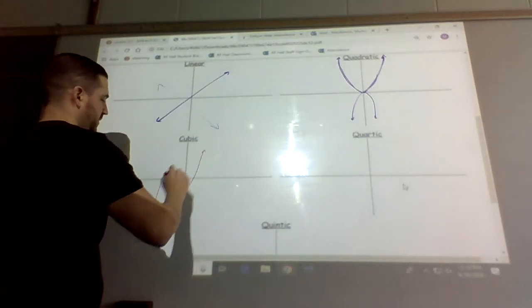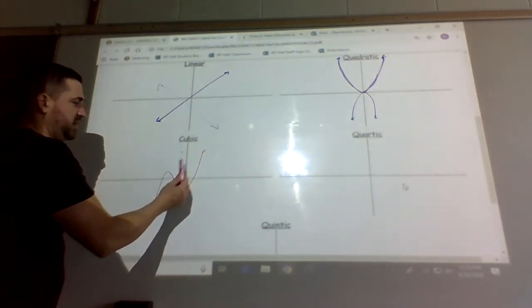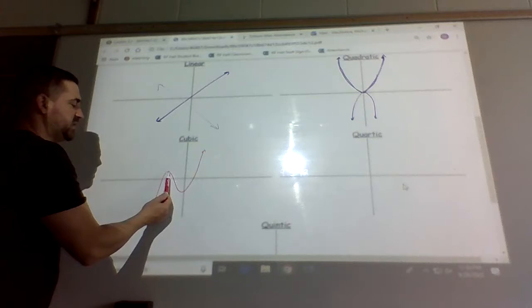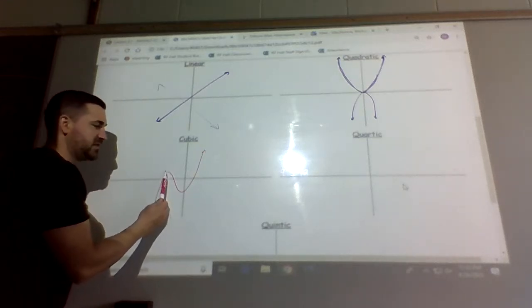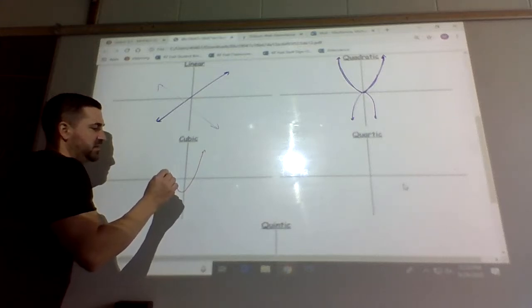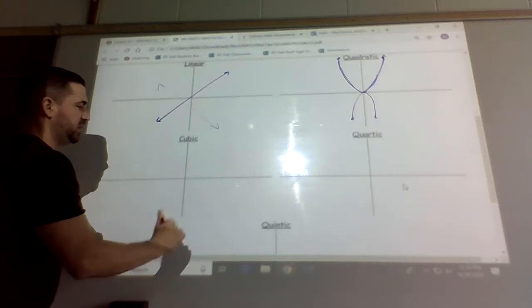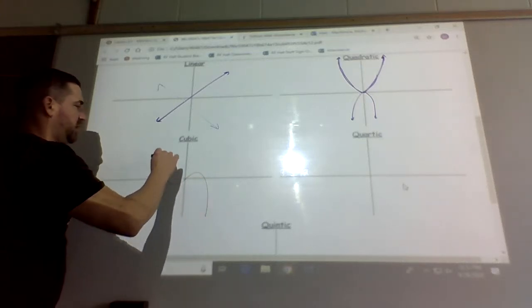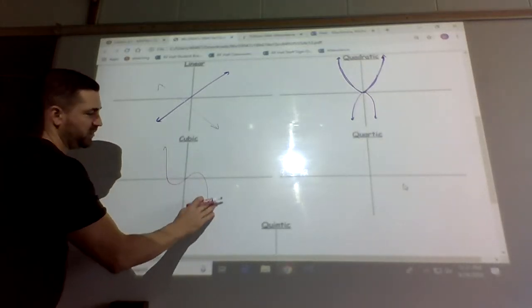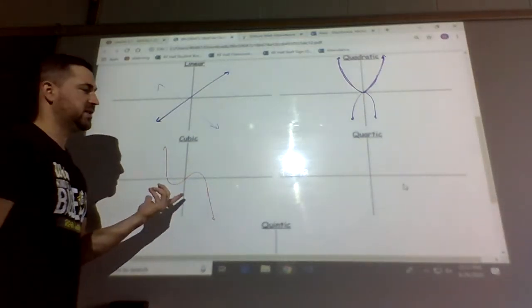So a cubic function could look something like this. So it has not just a slight bend but it has an actual, this is called a local maximum and local minimum. We'll learn that later in the chapter. So it bends get more pronounced. And we can also have a cubic function go in the other direction. So this would be a negative one.